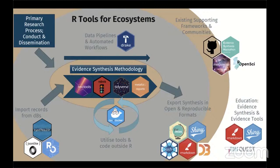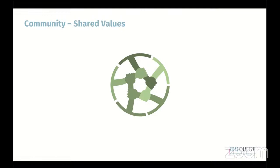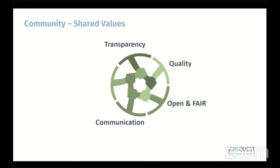On top of infrastructure, it's important to build a strong community based around clear shared values. Transparency of methods, data, and research processes; ensuring quality; fostering open reproducible research — both primary and meta-research; and ensuring research and data are FAIR: findable, accessible, interoperable, and reusable. This requires effective communication using existing platforms like Slack, forums, and conferences; setting clear standards and values; shaping our roles as community members; and setting codes of conduct to ensure the community is fair for all.